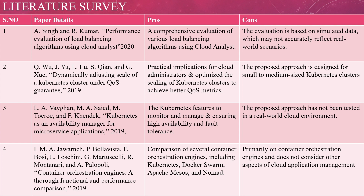Another paper is titled Container Orchestration Engine: A Thorough Functional Performance Comparison, proposed by I.M.A. Javarni, Bella Vista, Fbossi, L. Foshi, and others. It provides a comparison of several container orchestration engines including Kubernetes, Docker Swarm, Apache Mesos, and Nomad. The container orchestration engine was the primary focus of the paper, but it does not consider other aspects of cloud application management.